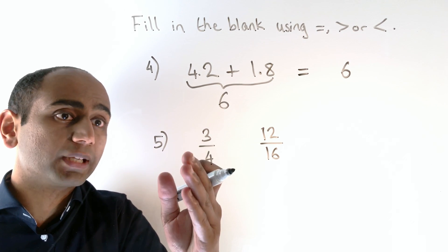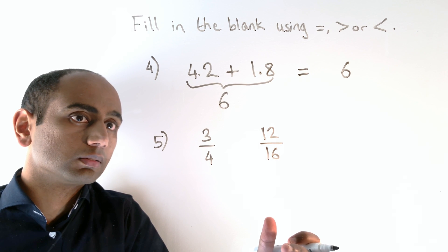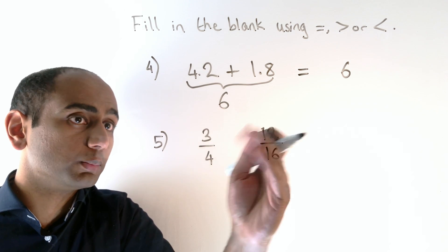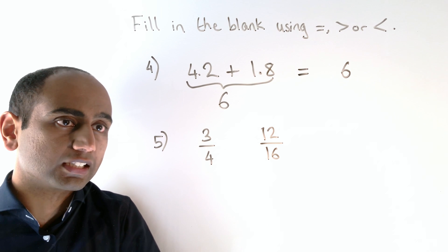In question five, we're comparing three quarters with twelve sixteenths. To compare fractions, we either want a common numerator or a common denominator. Let's go for a common denominator in this case.